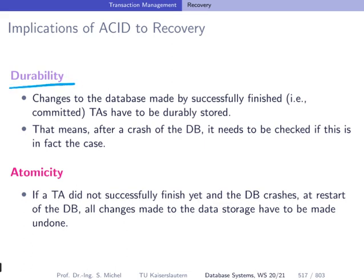After a crash, we must ensure that everything committed — transactions that have committed — has changes durably stored. Atomicity means transactions only partially executed when the crash happened must be made undone. We also look at the case of rollback or abort of transactions when a failure occurs inside a transaction. The transactions themselves can say rollback, or the database system can also say abort in case of some concurrency control issues.